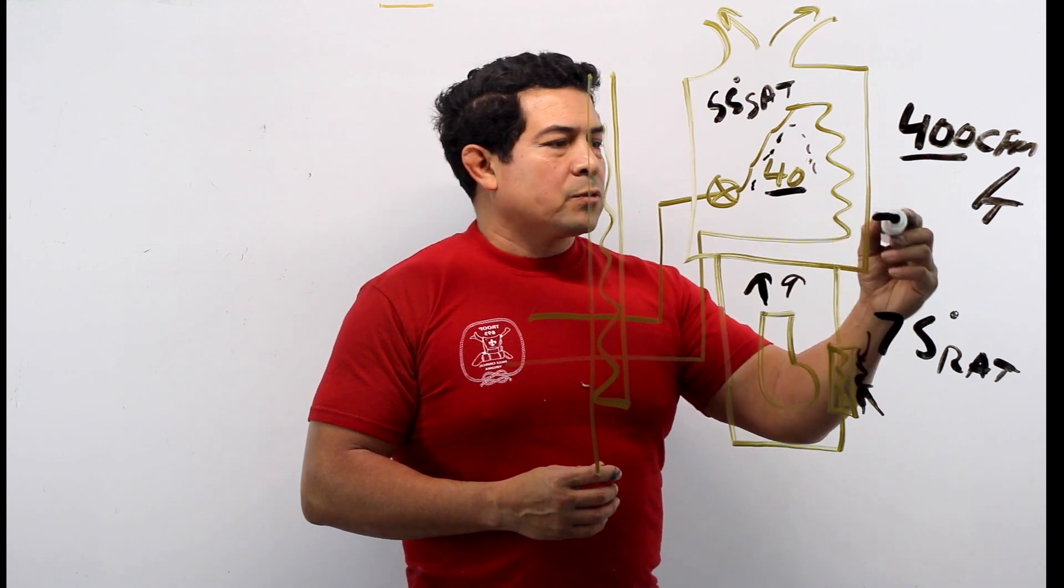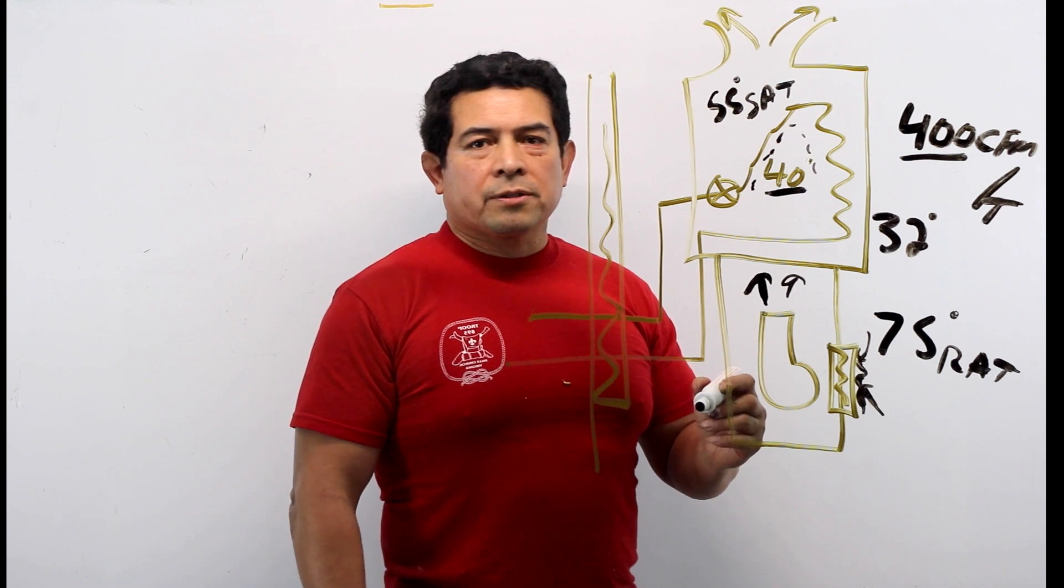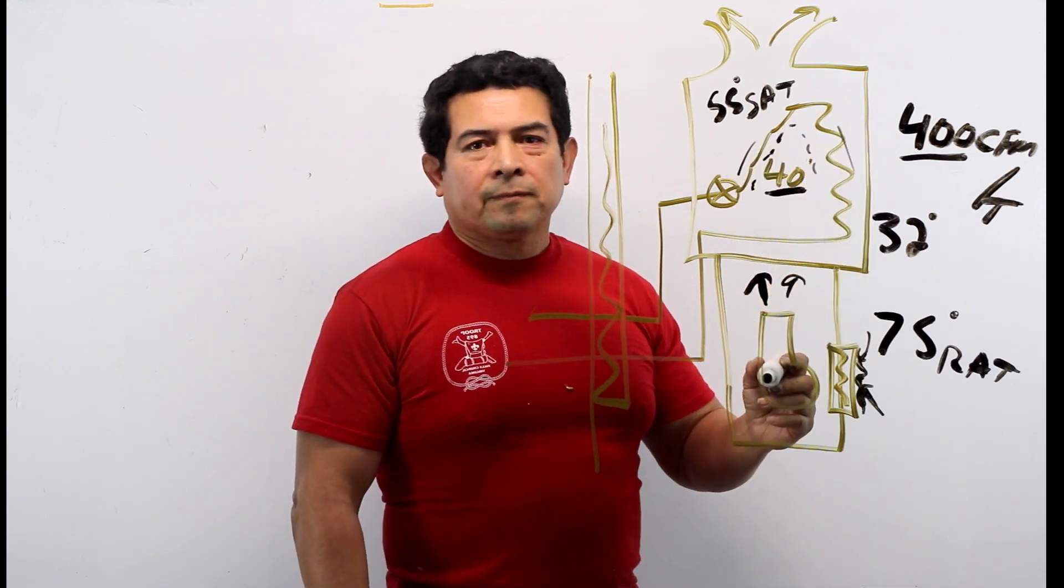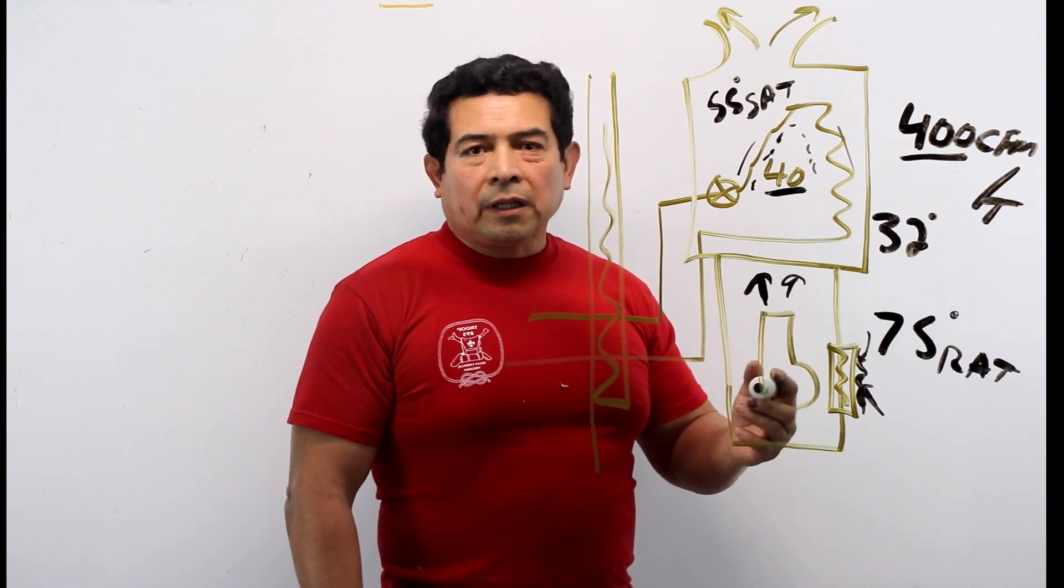Now what happens when the temperature of the coil drops down to 32 degrees? We start to get ice forming on the coil. Then we start to ice the coil up, and we're going to have even less airflow.